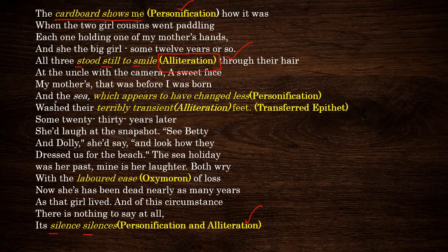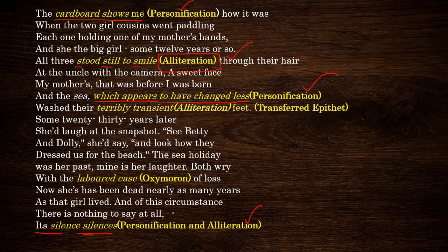Next, 'the sea which appears to have changed less' — the sea also has no human emotion. That is why it is called a personification. And then 'silence silences' — a photograph will not speak, so obviously it cannot be silent either. The emotions of silence, speaking, or laughing are all transferred to the photograph. That is why this is also called a personification. So these are the three personifications in the poem.